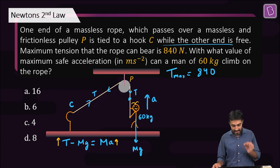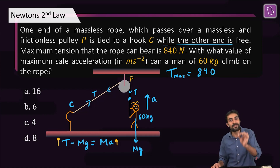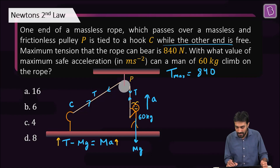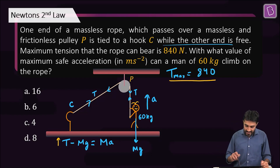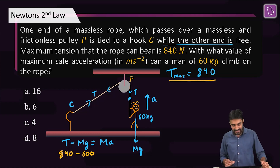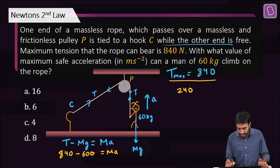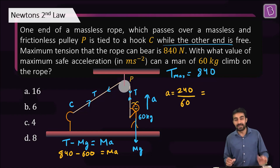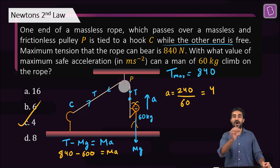Taking maximum tension as 840 N, with mass 60 kg and g = 10: 840 minus 600 equals 60 times A, so 240 divided by 60 gives A equal to 4 m/s². Option C is the right answer for maximum safe acceleration.